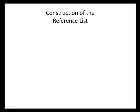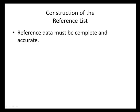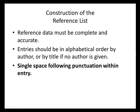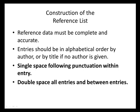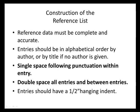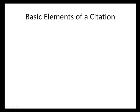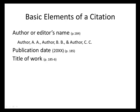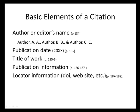When constructing our reference list, we must be as complete and accurate as possible. All entries need to be in alphabetical order by the author, and if no author is given, by the title of the item. You single-space following punctuation within the entry, and all entries must be double-spaced. Entries also should have a one-half inch hanging indent. The basic elements of a citation are: the author or editor's name (last name first, then first and middle initials), the publication date in parentheses, the title of the work, publication information, and locator information such as the website or DOI number.